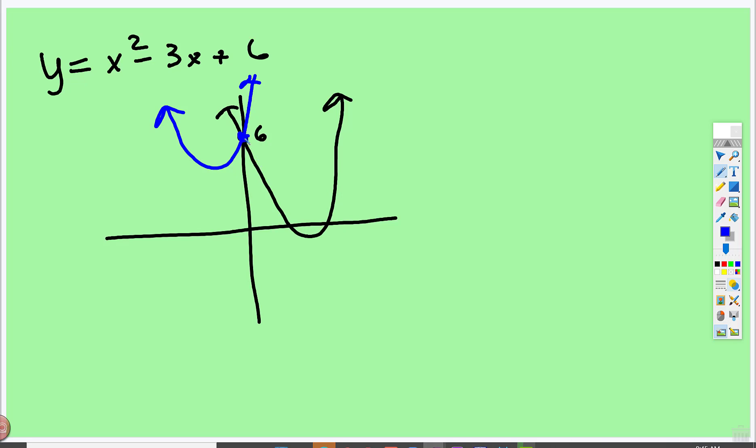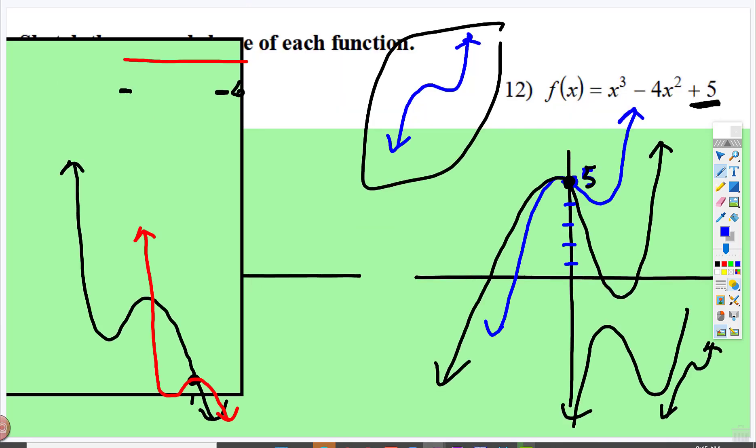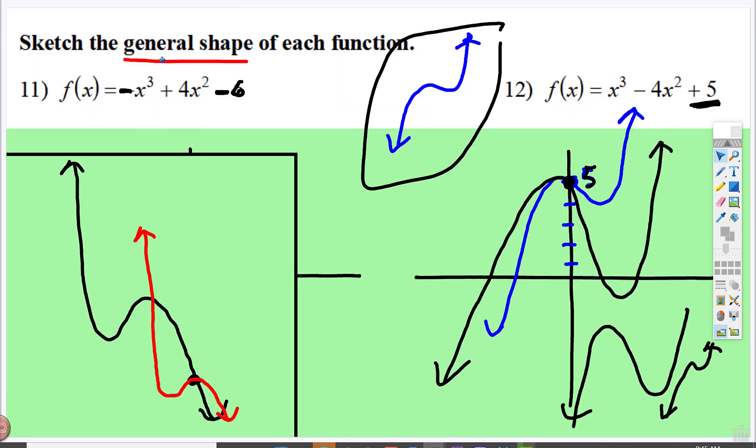So that's what it means when it says sketch the general shape. We're not looking for specific points. I'm looking for, do you have understanding of what parent graphs look like, and do you know where it's going to touch at the y-axis? That's what I'm looking for. Alright, I'm going to end this one and then we're going to start the three theorems.